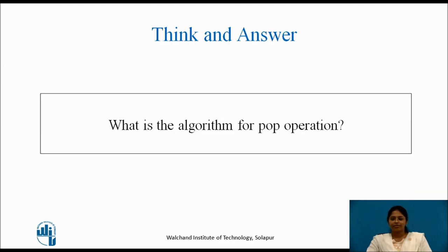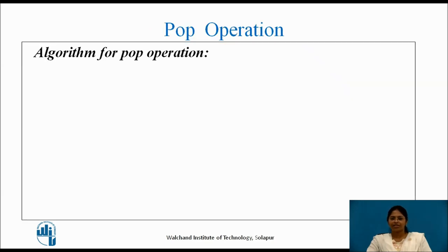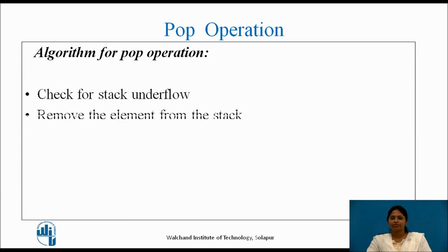Now think and answer: based on the algorithm for push operation, try to think and answer the algorithm for pop operation. Pop operation is the process of removing an element from the top of the stack. First we need to check whether the stack has underflown — that is, whether the stack is empty. If the stack is empty, we cannot pop any element. If the stack is not underflown, then remove the element from the stack where the top is pointing, then decrement the top.